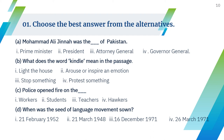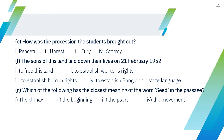When was the seed of the language movement sown? 21st February 1952, 21st March 1948, 16th December 1971, or 26th March 1971. How was the procession the students brought out? Peaceful, unrest, fury, or storm. Why did the sons of this land lay down their lives on 21st February 1952? To free this land, to establish workers' rights, to establish human rights, or to establish Bangla as a state language. Which has the closest meaning of the word 'seed' in the passage? The climax, the beginning, the plant, or the movement.